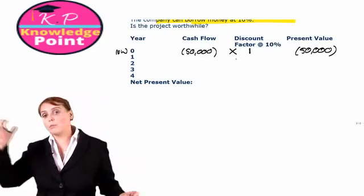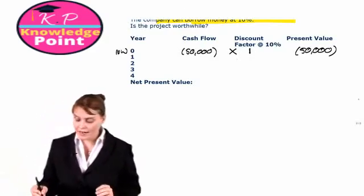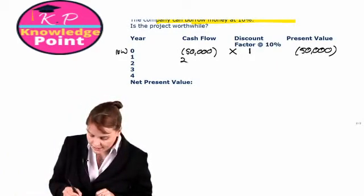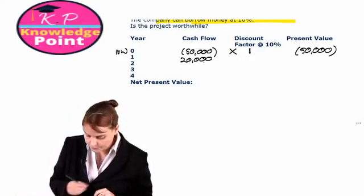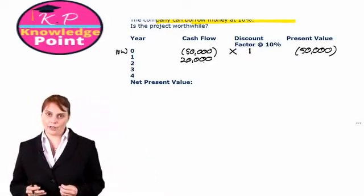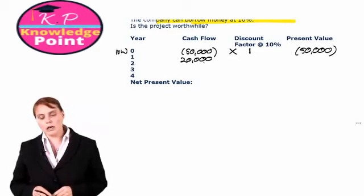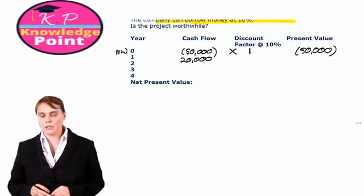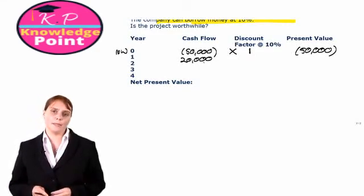So in one year's time, we're going to have a cash inflow of $20,000. Now we need to consider the discount factor. We know that our discount rate, R, is 10%. What's our number of time periods? What's our value for N?